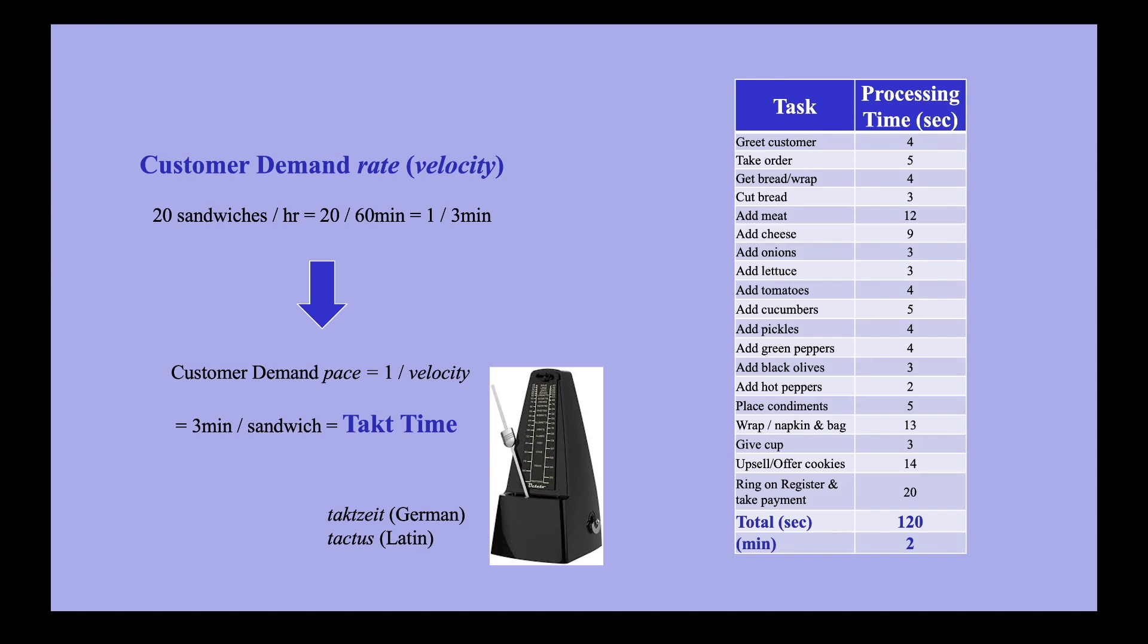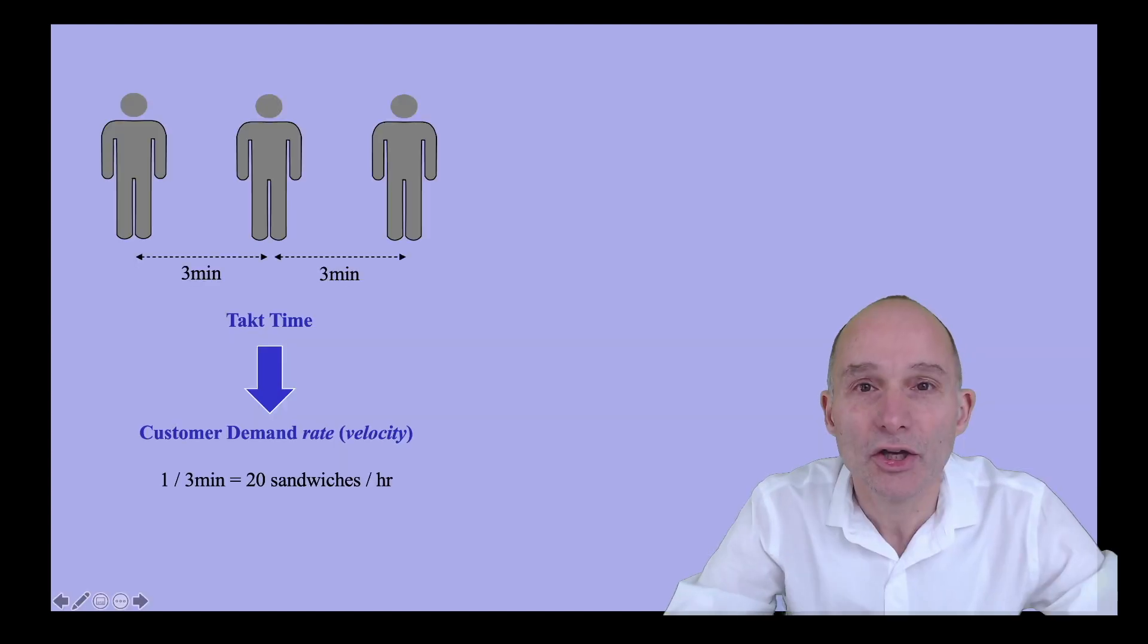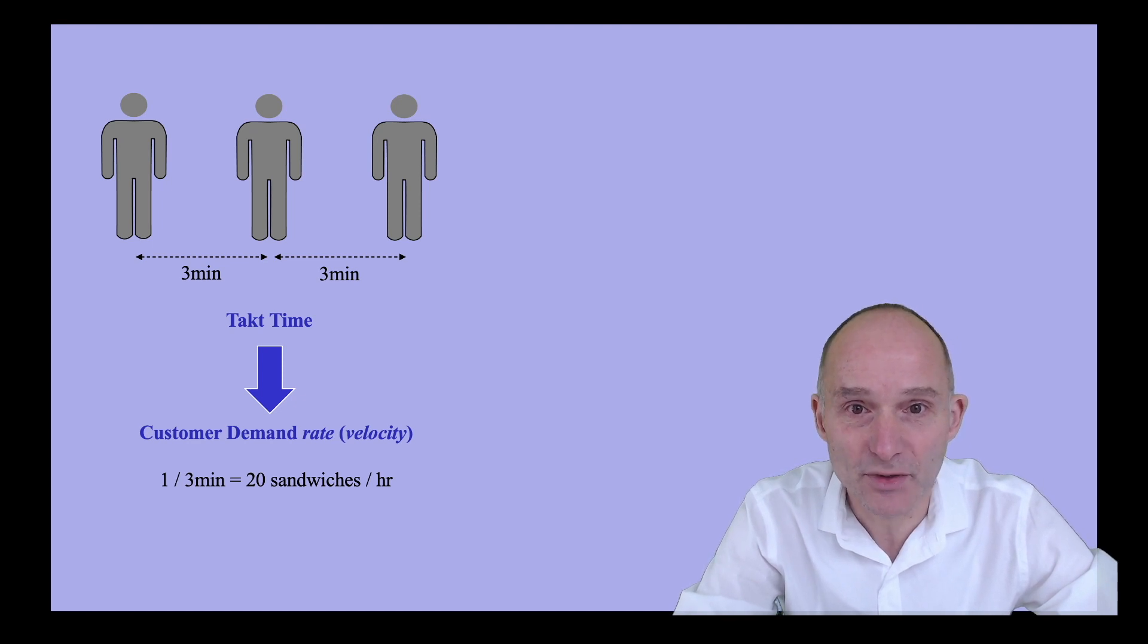Of course, if the demand changes, takt time changes, and as long as the fluctuations are within 33%, the sandwich shop can manage. So let's show this graphically. Customer demands arrive every 3 minutes, which is the takt time. Each customer demand for a sandwich requires 2 minutes of value-added processing time.